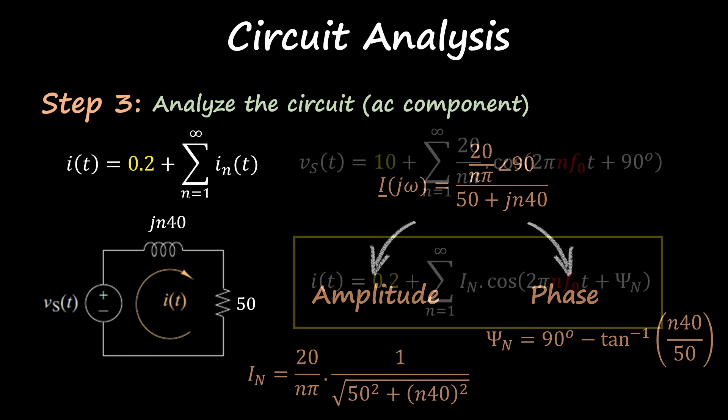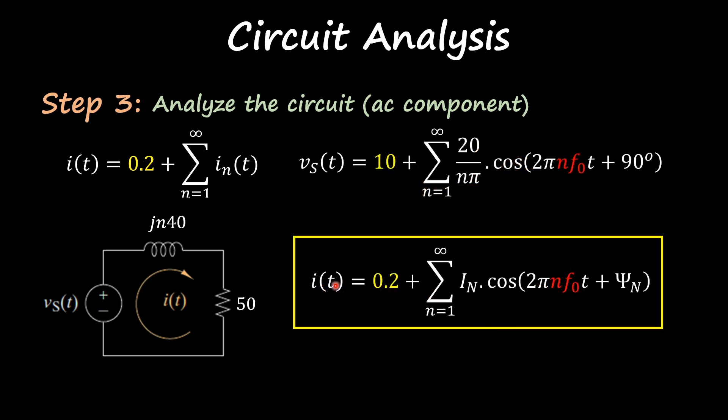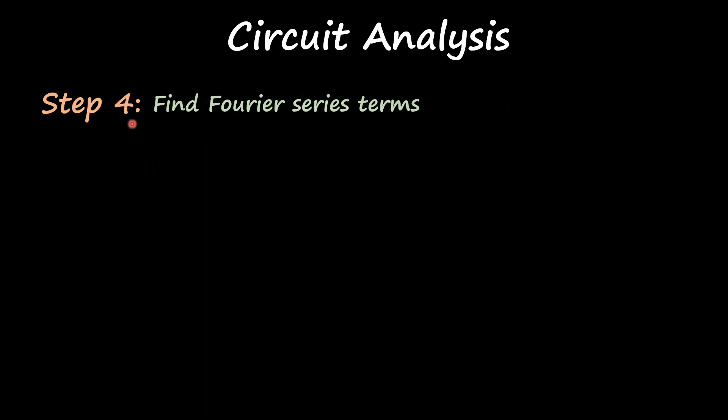I get the following current: the 0.2 DC component plus the summation of that I_n and those phases. I finished step number three, and step number four is to find the Fourier series of these terms.